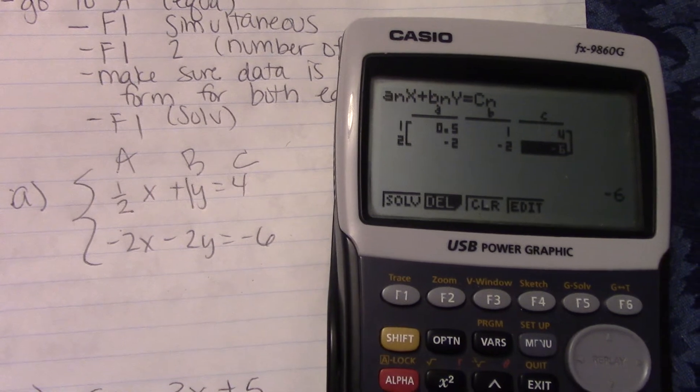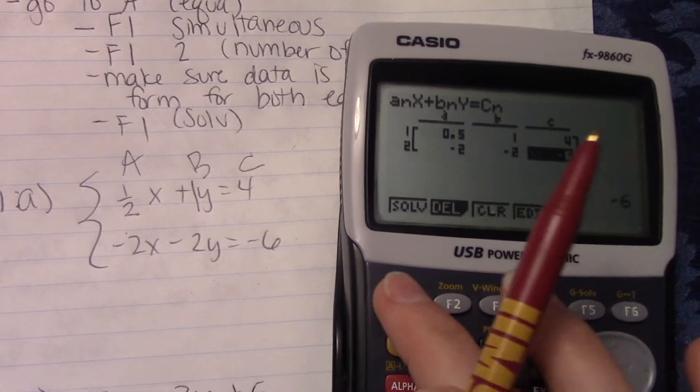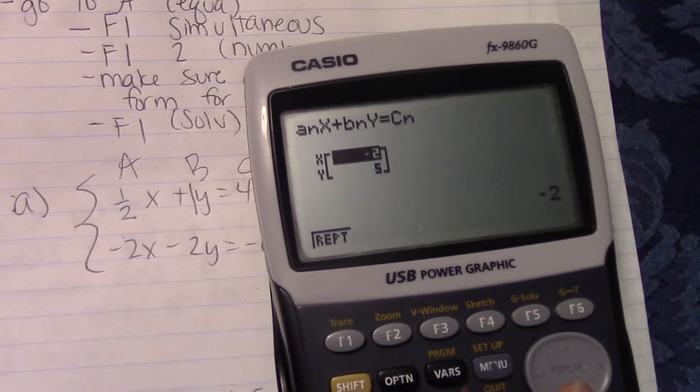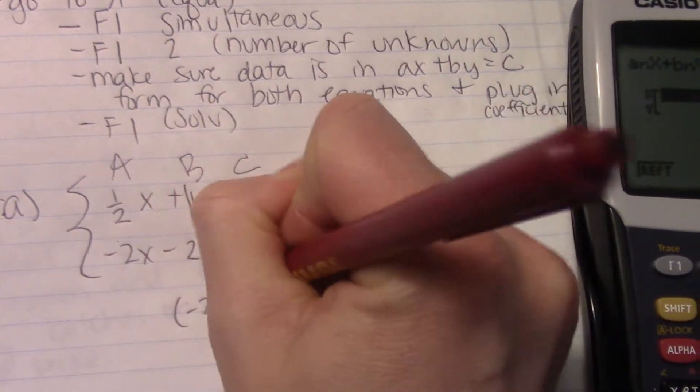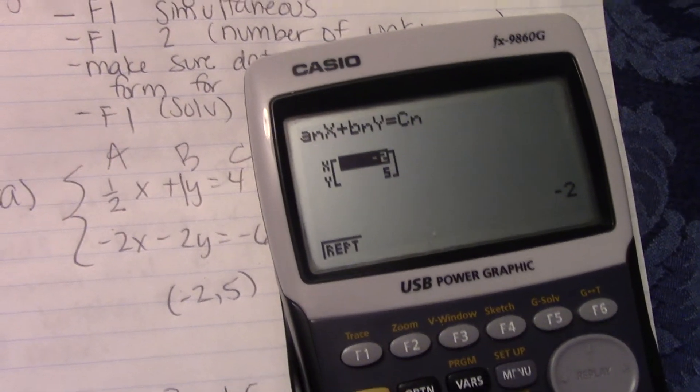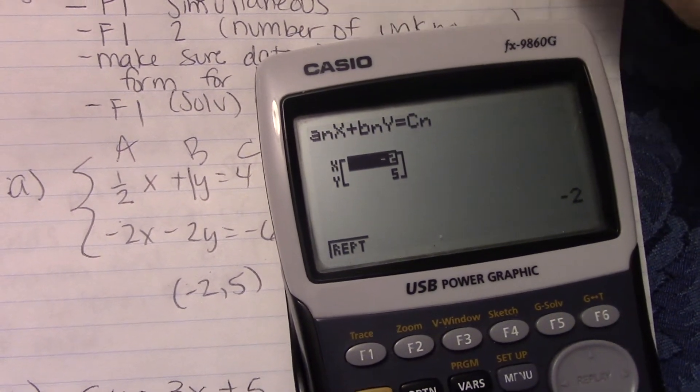Okay, when you are done you need to hit F1 and solve. And so this answer here is negative 2, 5. So this one is negative 2, 5. So we did all that without having to do substitution or elimination.